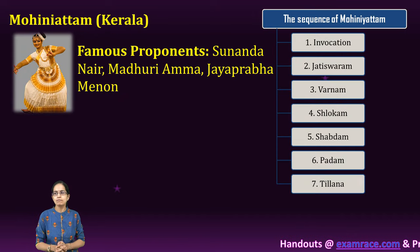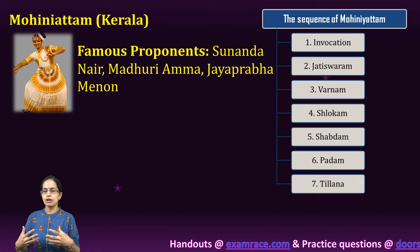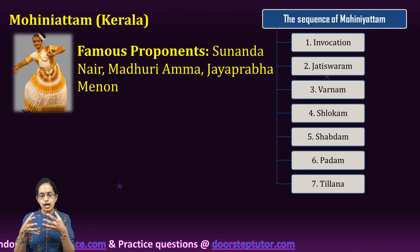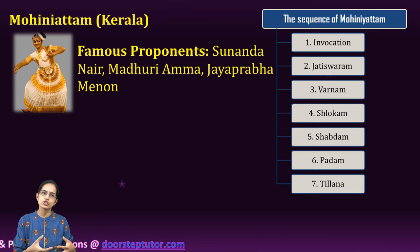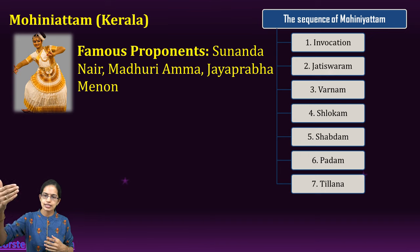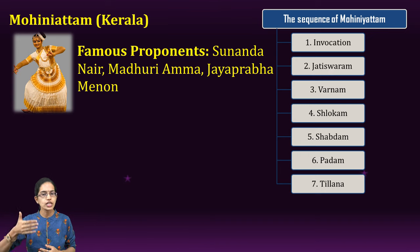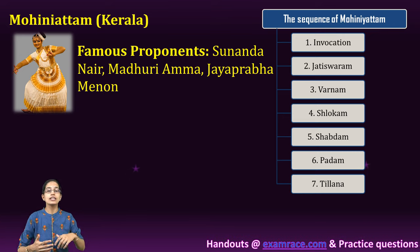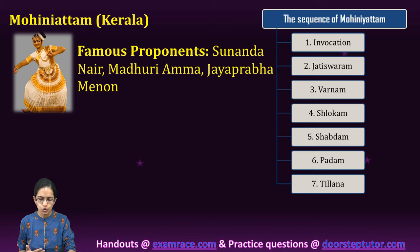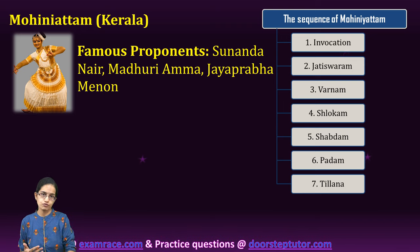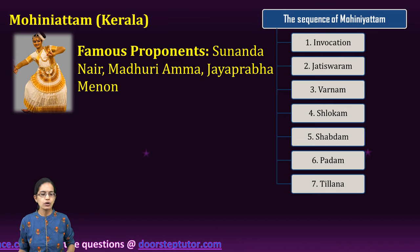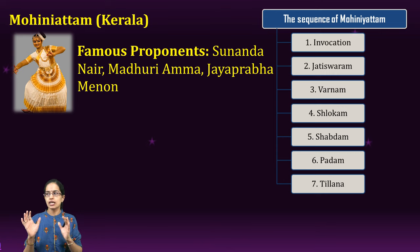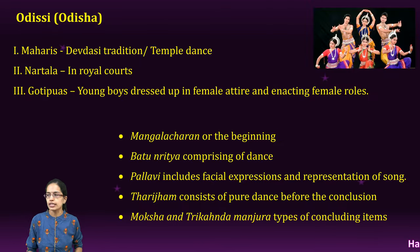Mohiniattam from Kerala is a dance performed by females, usually a solo dance depicting devotion and love. Costumes are white to off-white in color. The sequence starts with invocation and ends with Tilana, similar to Bharatnatyam. It narrates the story of the dance of Vishnu, and the Lasya element of Natya Shastra is clearly depicted in Mohiniattam.